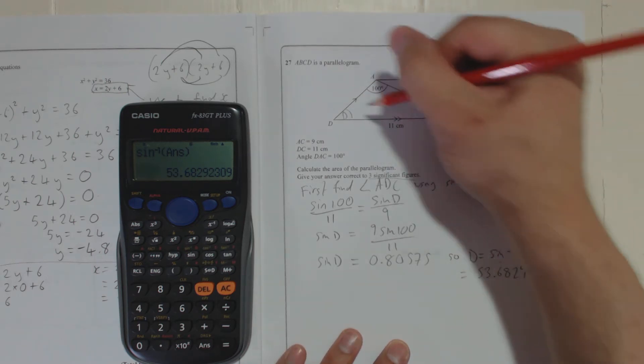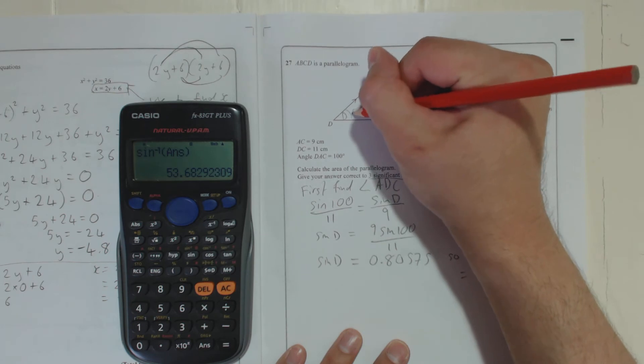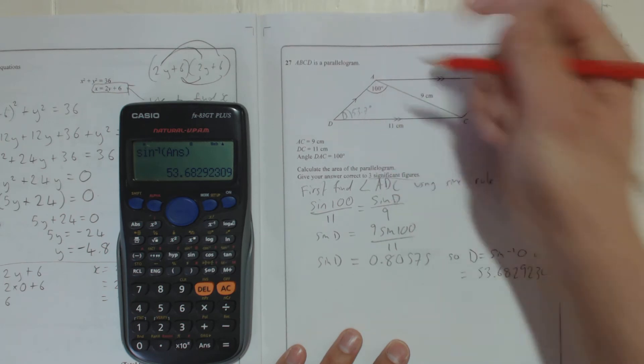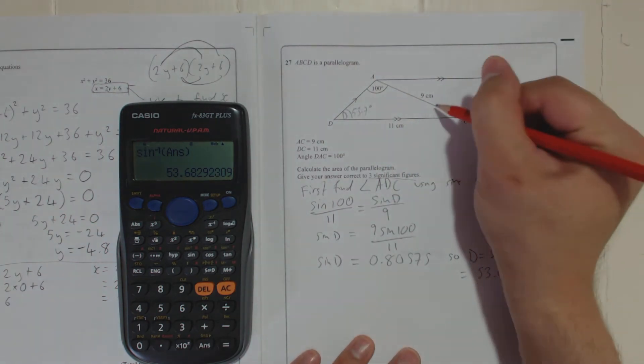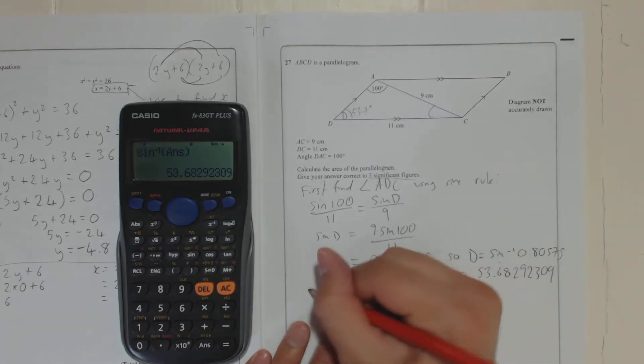So that's the sine of the angle. So D equals sine to the minus 1 of this. Because that's the sine of the angle, we want the actual angle, so you do your inverse sine. So I'm going to calculate our shift sine, so sine to the minus 1, and the button ANS, that automatically keeps our original answer in full accuracy. And the answer we get is 53.68292309. So I'm going to write that here. That is 53.7 degrees. So now I'm going to find this angle here.